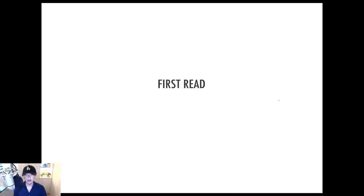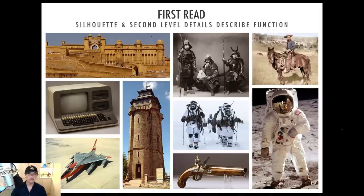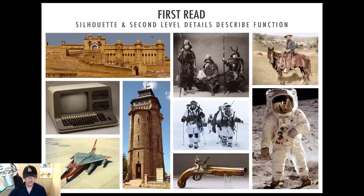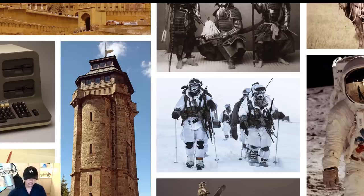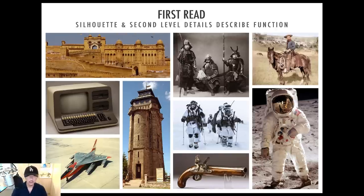Now moving to first read. When you first look at an image, is it interesting? I have examples of various subject matters, and right off the bat you can understand what you're looking at — a castle, a computer, a jet, a tower, various costumes. You know what they are within fractions of a second. That means your eyes did not look at an individual screw or the trigger on the gun — you looked at it as a whole.